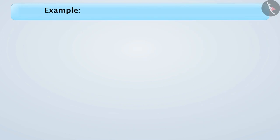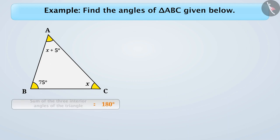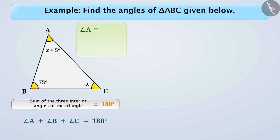Next example. Find the angles of triangle ABC given below. The angle-sum property of a triangle tells us that the sum of interior angles is 180 degrees. So here, we can write it as angle A plus angle B plus angle C is equal to 180 degrees. Here, angle A is equal to x plus 5 degrees, angle B is equal to 75 degrees, and angle C is equal to x.